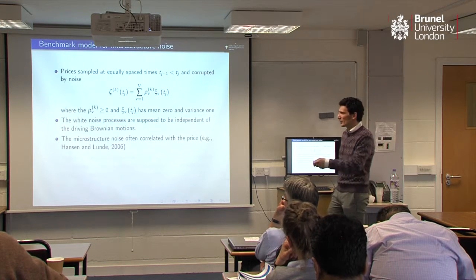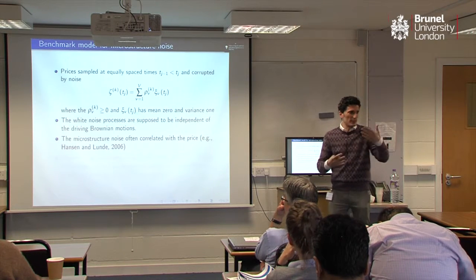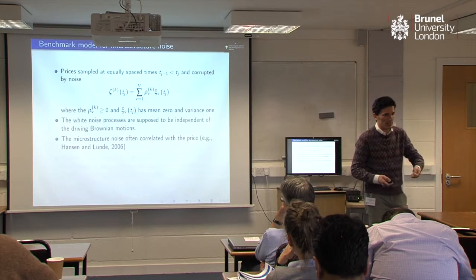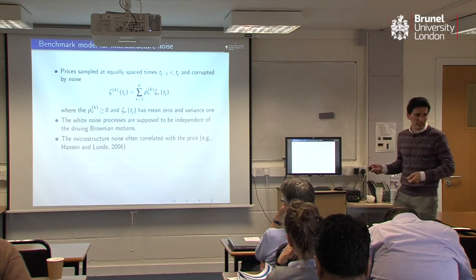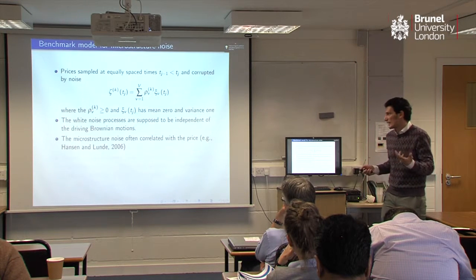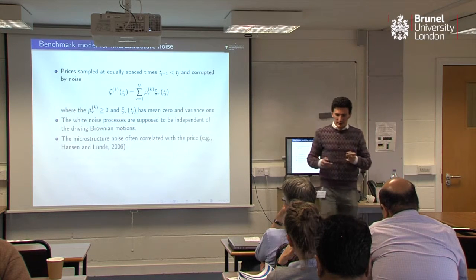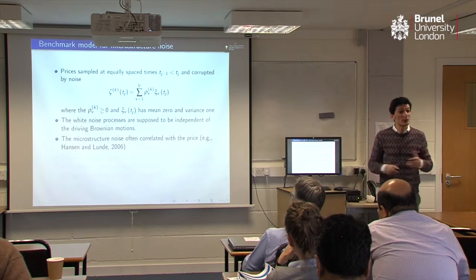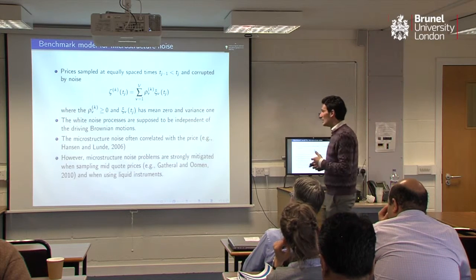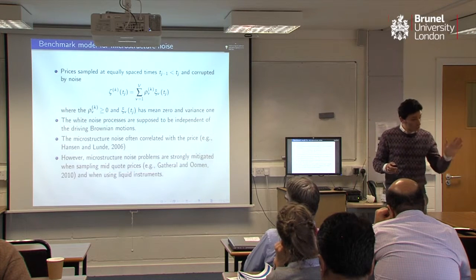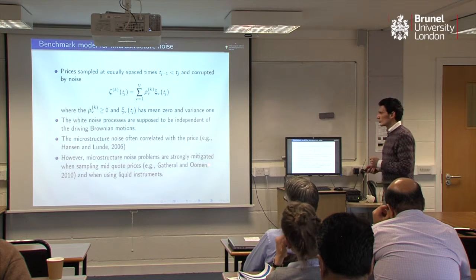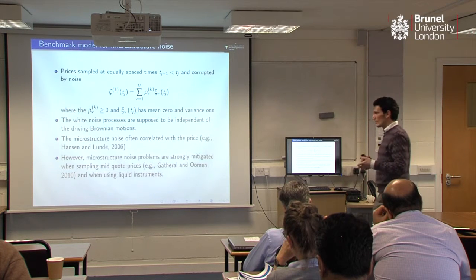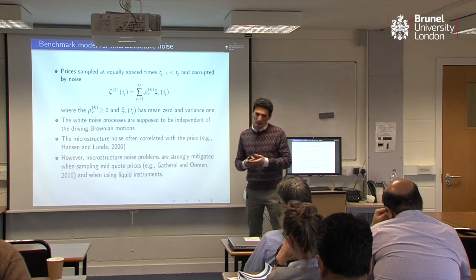There is just a standard market microstructure model where the noise only appears at the sampling period. Prices are not sampled continuously but only at fixed intervals, and every time you sample at some fixed interval there is some noise added with a non-zero variance. The market microstructure noise is assumed to be uncorrelated with the price — which, as a simplifying assumption, is a known limitation. However, when you sample mid-price quotes, the impact of market microstructure is quite reduced.